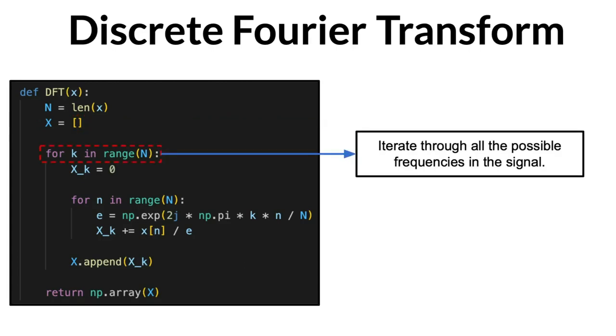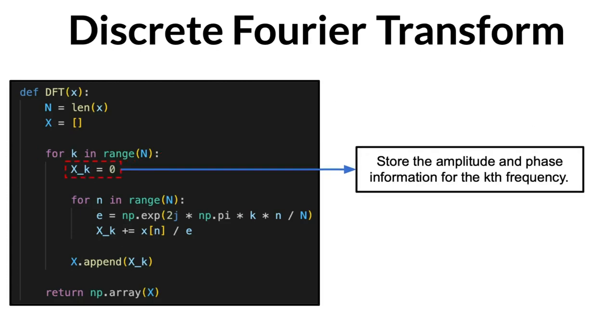Then, we iterate through all the possible frequencies in our signal, which are lower than the number of samples N. Actually, the maximum frequency is equal to N over 2, but more on this a little bit later, and store the current frequency information in xk.